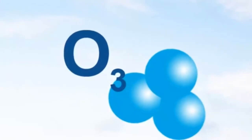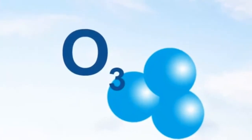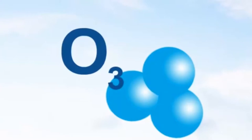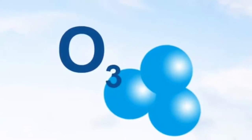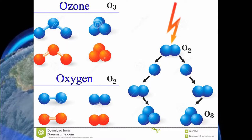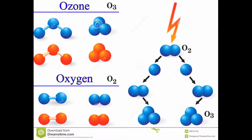El ozono es una sustancia gaseosa cuya molécula está compuesta por tres átomos de oxígeno. Cuando una molécula de oxígeno se descompone, cada átomo liberado se une a otra molécula de oxígeno gaseoso. De esta manera se forman dos moléculas de ozono.